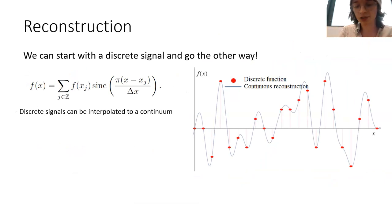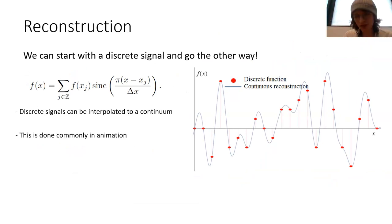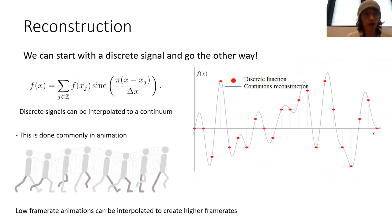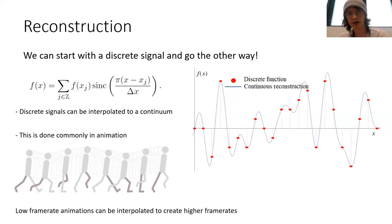You can also start with a discrete signal and interpolate it into a continuous one. So you start with discrete samples and interpolate into a continuous one — you don't have to start with continuous and sample down. This is actually commonly done in animation, where you might have a low frame rate animation at 16 or 30 frames per second, and then interpolate that into a continuum using an interpolation function to do reconstruction, then sample back down at a higher frame rate. That's how 30 fps animations are often upscaled to 60 fps.